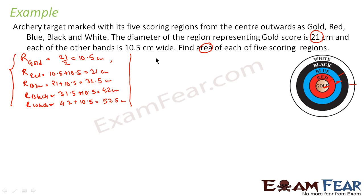So we will put this here. So area of gold if you see is very simple. Area of gold will be π, the radius of gold, square. That will be nothing but π into 10.5 square.